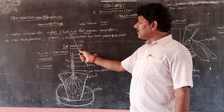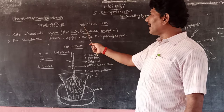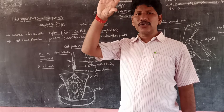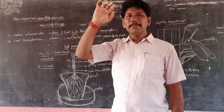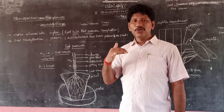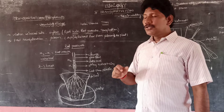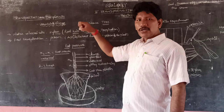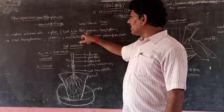Root hair and root pressure alone are sufficient for small plants like herbs and shrubs, which are nearly 2 to 3 meters in height. However, for large trees such as mango, neem, and eucalyptus — which can reach 100 to 200 feet in height — root hair and root pressure are not sufficient to transport water against gravitational force over such long distances. These large trees need an additional technique: transpiration or evaporation.